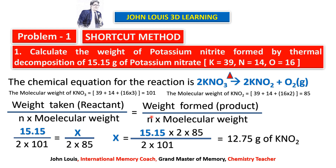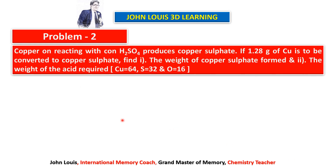Hope you understood this. Once you understand problem one, it is easy to work out the remaining problems. I have explained three more problems and given two for you to work out on your own. Problem number two: copper reacting with concentrated sulphuric acid gives copper sulphate plus sulphur dioxide plus water, and we need to balance that equation.